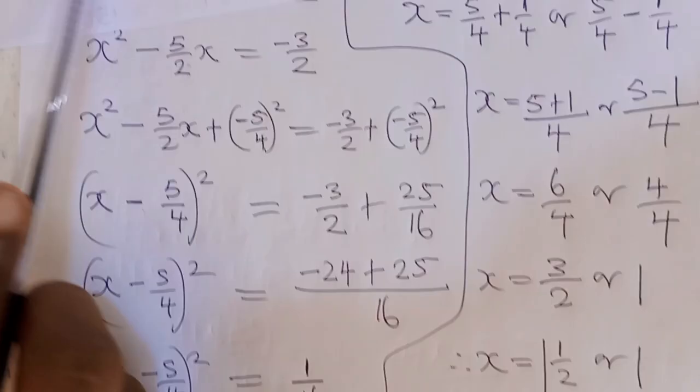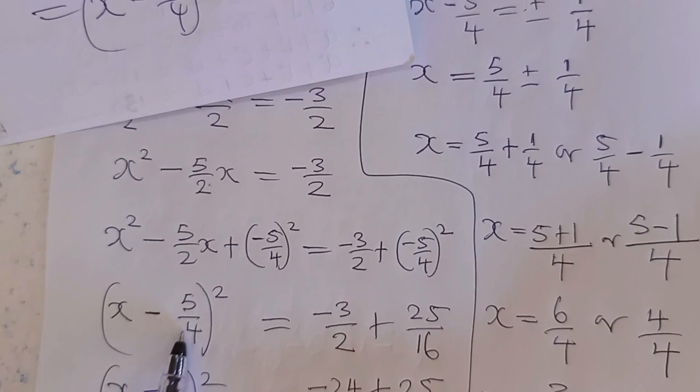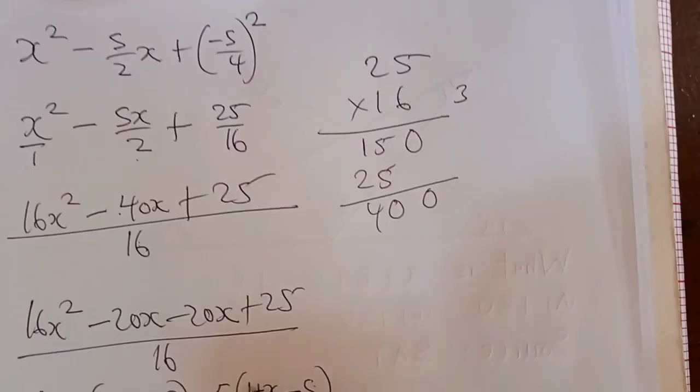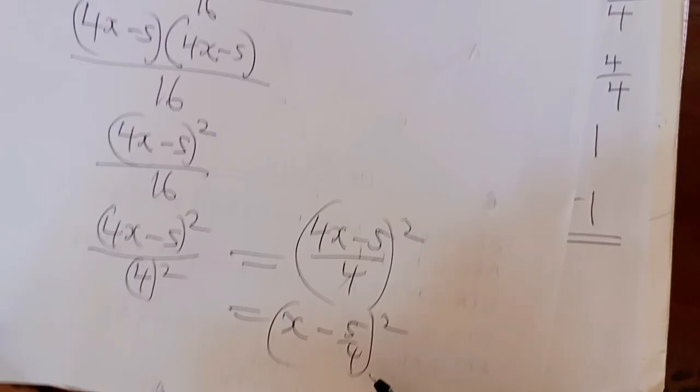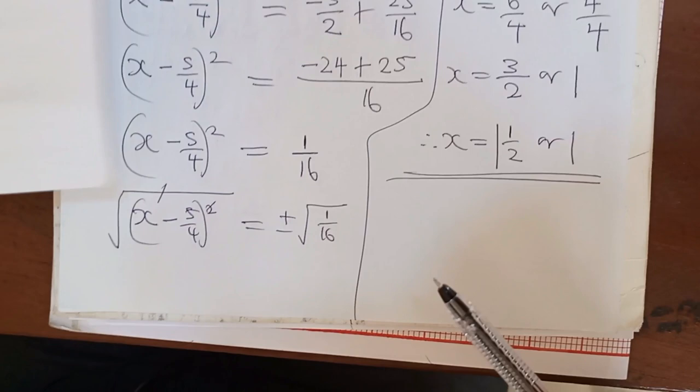You can see now that the shortcut works — from the expanded form I arrive at exactly (x - 5/4)². Imagine doing all that factorization every time; the shortcut saves you from that headache. Whenever you reach this stage, just pick the x term and the half-coefficient, put a square outside, matching the sign. I believe you've enjoyed this class — watch it again, make your own notes, share the video, subscribe to the channel, and see you in the next class.